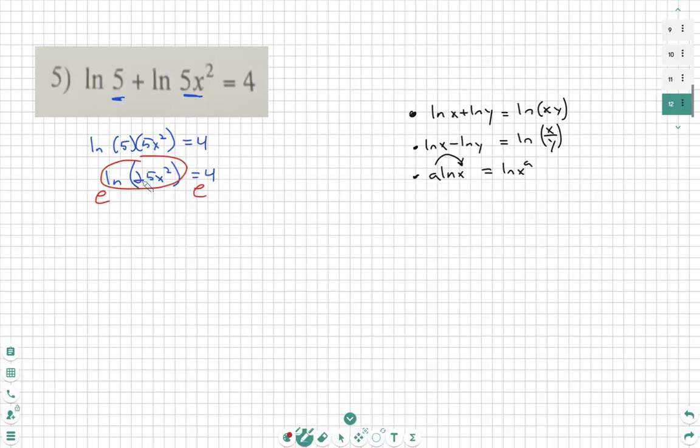So now both ln 25x squared and 4 became the exponents for the e. This is going to cancel now. What is left?